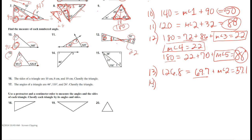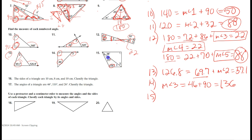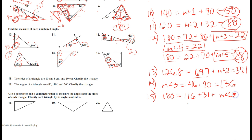Number fourteen: angle three equals the sum of forty-six and ninety, which is one hundred and thirty-six. Number fifteen: I've got two angles inside a triangle and need the third. One hundred and sixteen plus thirty-one plus the measure of angle one equals one hundred and eighty. Subtracting one hundred and sixteen and thirty-one from one hundred and eighty gives angle one equals thirty-three.